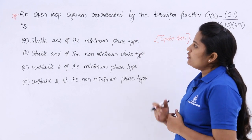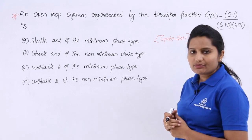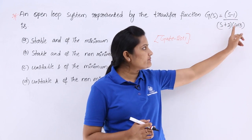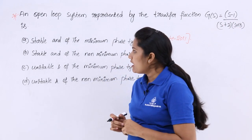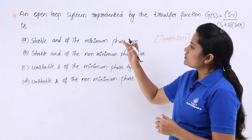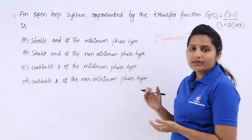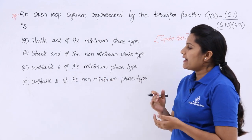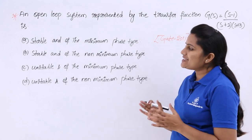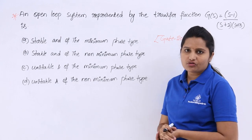You can see an open loop system represented by the transfer function G(s) = (s - 1) / ((s + 2)(s + 3)). They ask whether that open loop transfer function represents a system that is: stable and minimum phase type, stable and non-minimum phase type, unstable and minimum phase type, or unstable and non-minimum phase type. We need to select the apt answer.